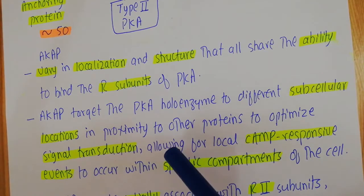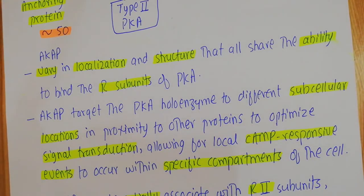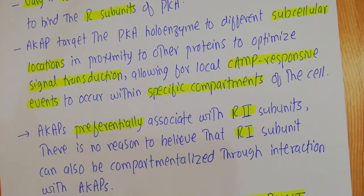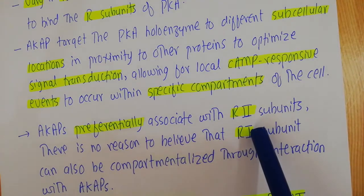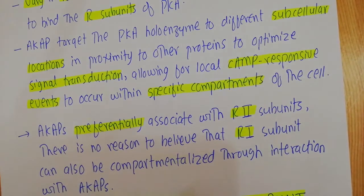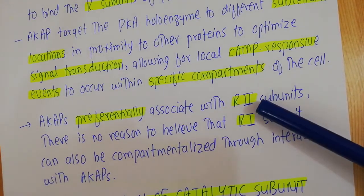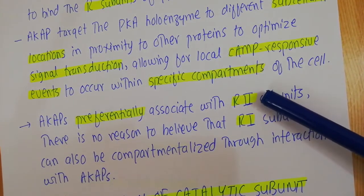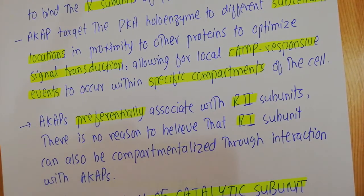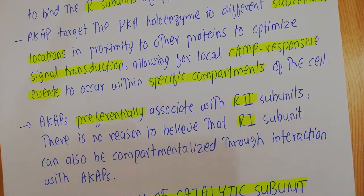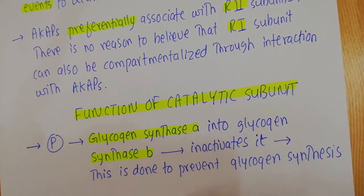According to the reported literature, AKAPs preferentially associate with the R2 subunits — the type 2 regulatory subunits. However, there is evidence that type 1 regulatory subunits can also be compartmentalized through interaction with AKAPs. Most studies confirm that protein kinase A bearing type 2 regulatory subunits interacts with AKAPs. Once protein kinase A is activated, cyclic AMP binds to the regulatory subunits and the catalytic subunits are released to carry out their activity.